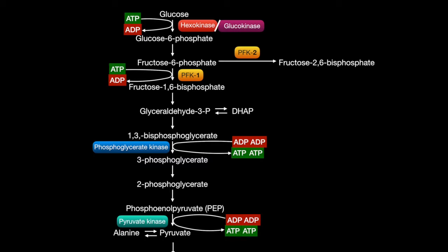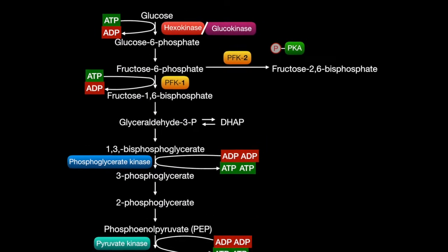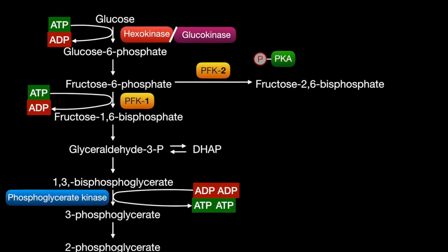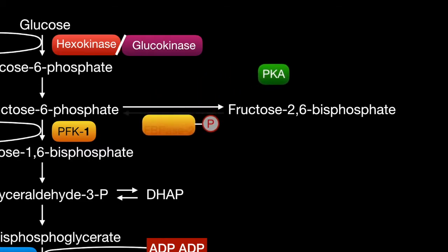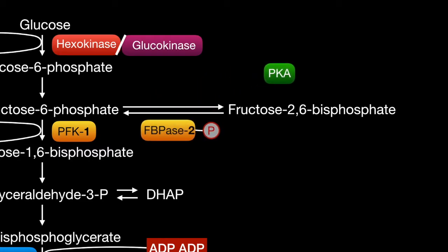Phosphofructokinase-2 exists in two forms. The dephosphorylated form is the active form, called phosphofructokinase-2, or PFK-2. Phosphorylation deactivates the enzyme, which is then called fructose-bisphosphatase-2, or FBPase-2. The enzyme that mediates its activity is protein kinase A.